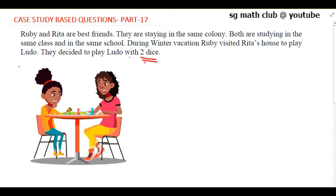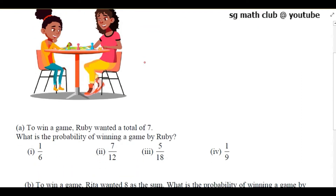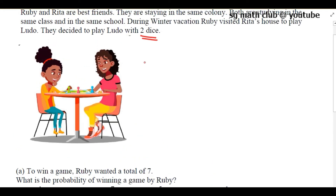This problem is related to 2 dice. The first question is: to win a game, Ruby wanted a total of 7. What is the probability of winning the game by Ruby? When you throw 2 dice, what are the total possible outcomes? With that only we will be able to find the answer for this question.